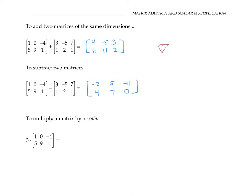Note that it's not possible to add or subtract matrices with different dimensions, because we wouldn't be able to line up corresponding elements. To multiply a matrix by a scalar — it's just a number — we again do just what you'd think: we multiply each element by that number.